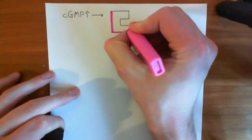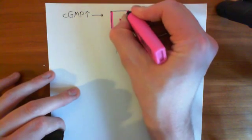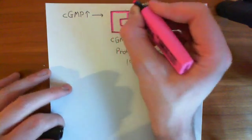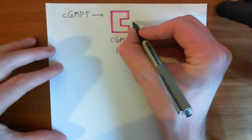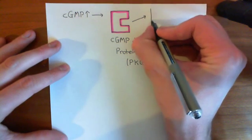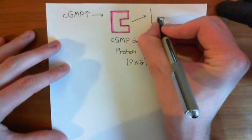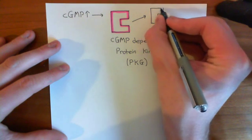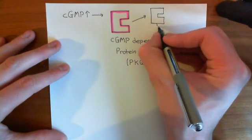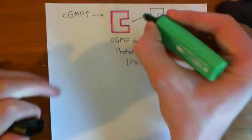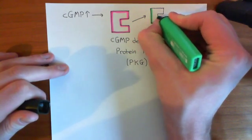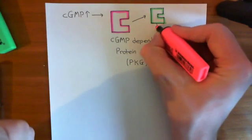So what's protein kinase G going to do? Well, it's going to cause the smooth muscle cell to relax. The first thing it's going to do is phosphorylate and activate an enzyme known as myosin light chain phosphatase. Here we've stuck a phosphate group onto this myosin light chain phosphatase, which I'll draw in green. So this is myosin light chain phosphatase with this phosphate group now stuck onto it.